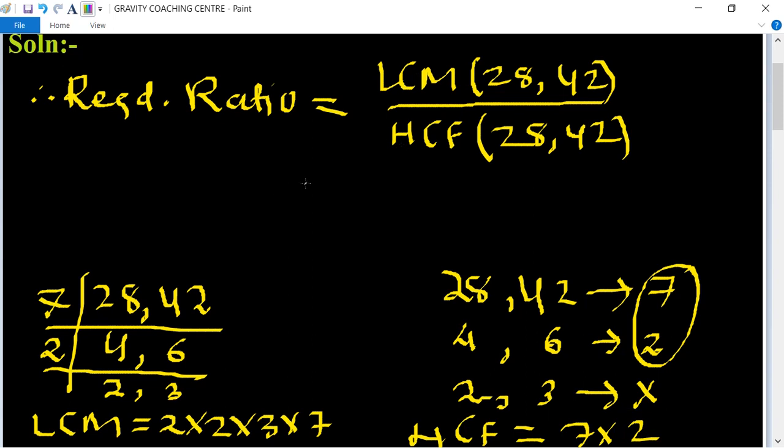So now we put the value of LCM: 2 multiply 2 multiply 3 into 7 upon 7 into 2. So the 2s cancel and the 7s cancel.